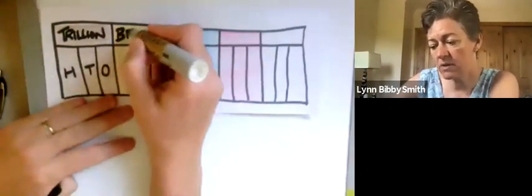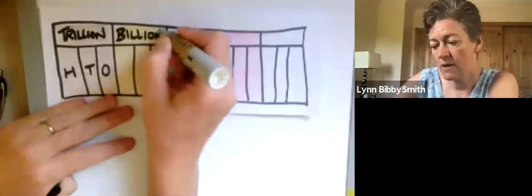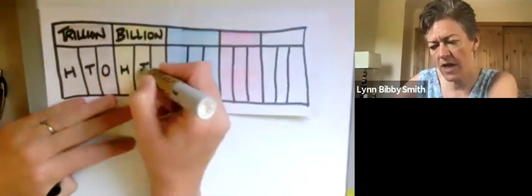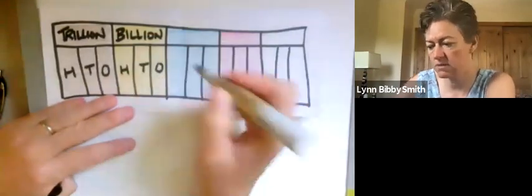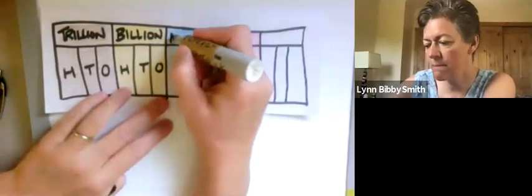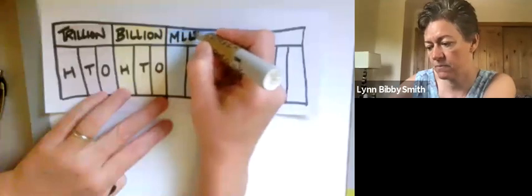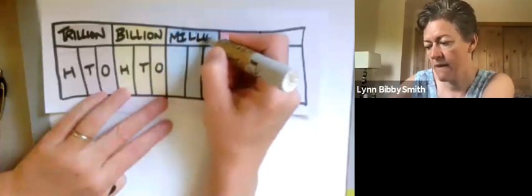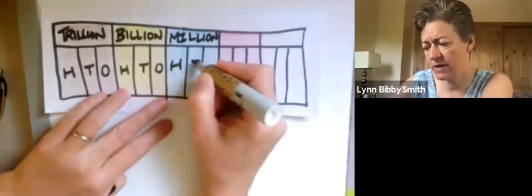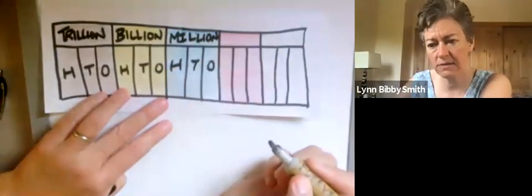Next door to them was the Billion House. Strangely enough, they were also called Hundred, Tens, and Ones. Next to them were the Million Family, and they were called Hundred, Tens, and Ones.